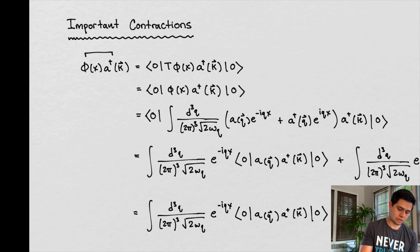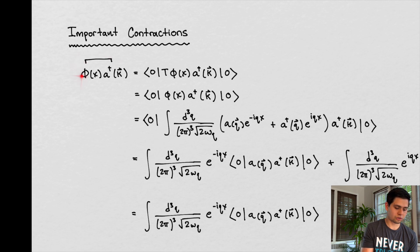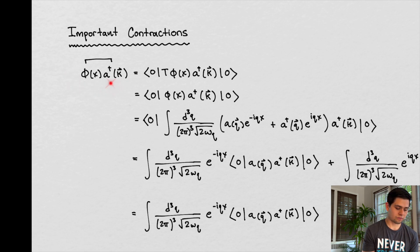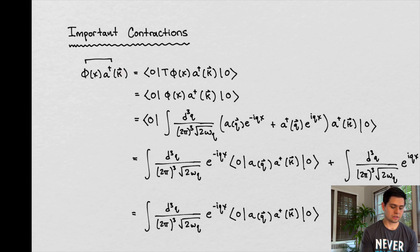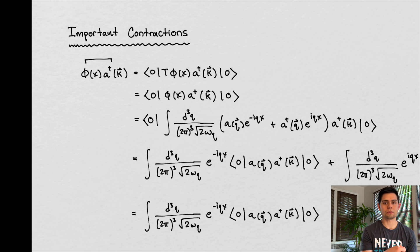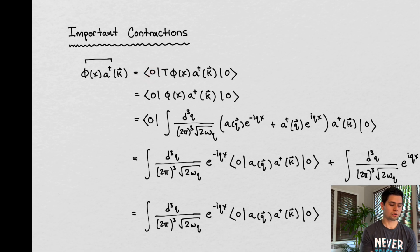We're going to start off with contracting a field with an operator. Remember that the field is a function of spacetime and the operator is a function of the full momentum, so these things are functions of different variables. For the contraction, if we take Wick's theorem, it's the difference between the time-ordered and the normal-ordered product. The normal-ordered product is going to go to zero when we sandwich between a bra and a ket vector that are the same. So essentially, a contraction is the same thing as just the time-ordered product.